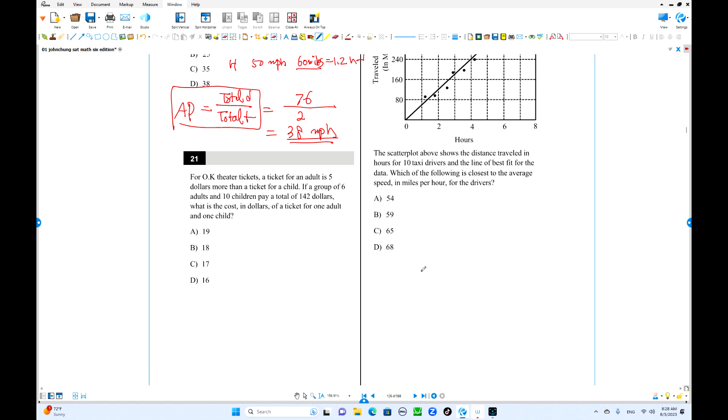Number 21, ticket for adult is 5 dollars more than a ticket for child. Child ticket is x, adult ticket is x plus 5. There are 6 adults, 10 children, paid total 142 dollars. So 10x plus 6 times x plus 5, which is 6x plus 30, total is 16x plus 30 equals 142 dollars. That is 16x equals 112, x equals 7. We are going to find one adult and a child. 7 plus 5 is 12 dollars. Sum of these two amounts is 19 dollars.